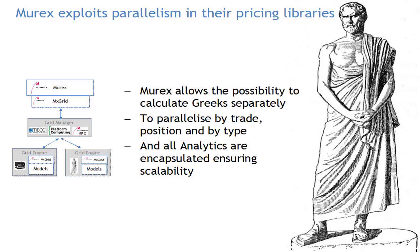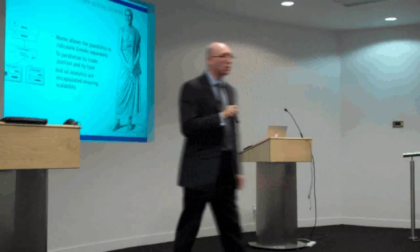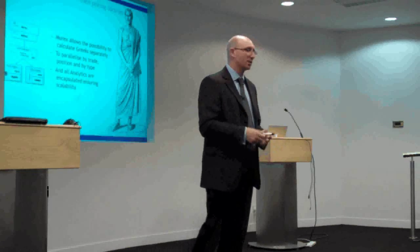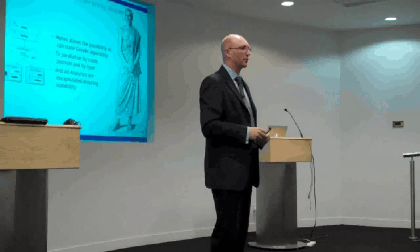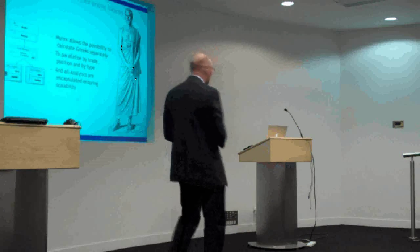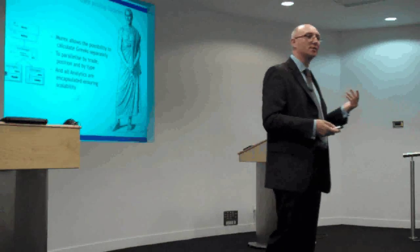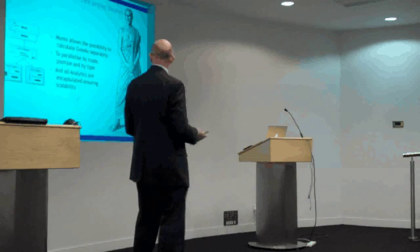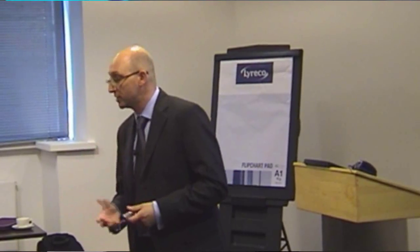Murex also has the capability, in the Max libraries, of splitting calculations out so that Greeks and pricing can be done separately. The good thing about Murex is that it satisfies, in the case of the Max libraries, the characteristics of grid — which are to have encapsulated pieces of work. All the data is collected in the Murex server and distributed down to the calculation engines. However, what we've done with one of our clients is we've been able to split out the trade and market data and deliver the market data using a caching technology — using Coherence in this case.